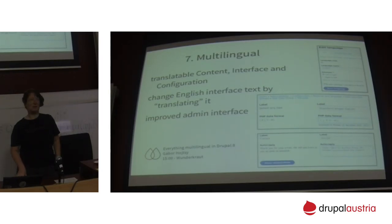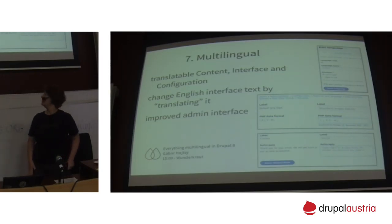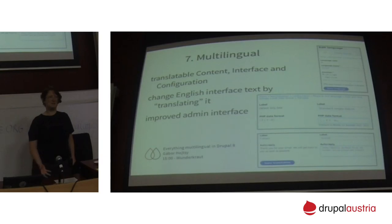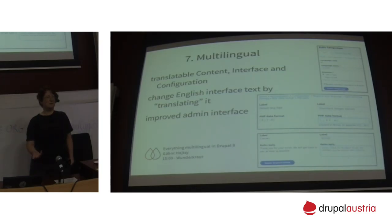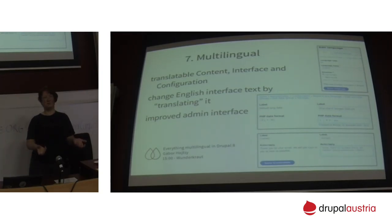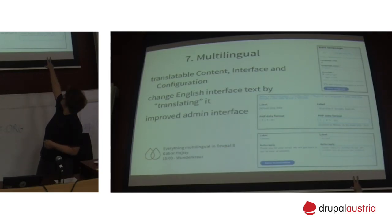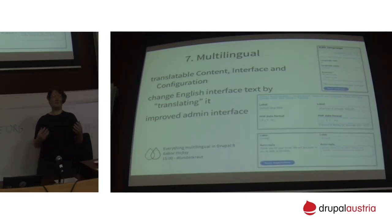You can also translate configuration. For me, one of the nicest things you can translate is dates and time formats. Quite often, Drupal 8 comes by default with the American date format. But even if you have a site bilingual between German and English, you not only want to translate 'February' but also have a dot after the date in German where you don't have it in English. You can translate the date format depending on language. You can even make a site with two different English formats, so that you only have the American format for American English and a normal date format for the rest of the world.